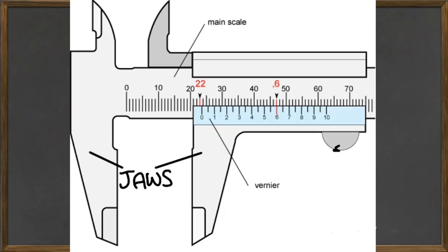First of all, we're going to be talking about what is a vernier caliper and what is its use. A vernier caliper is used to measure the distance of an object. As you can see, there are jaws right here, these are the jaws.